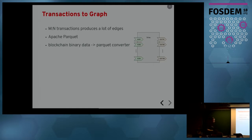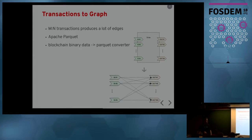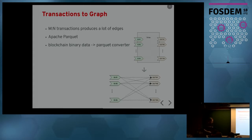Now, how to represent this as a graph? Because we can have multiple inputs and multiple outputs, it's hard to say which address sends money to whom. My first approach was to create a bipartite graph connecting all inputs with all outputs. I use this representation in one of my notebooks when calculating PageRank because that's all I need. I have a different representation with more details which I'll show in the next slide.